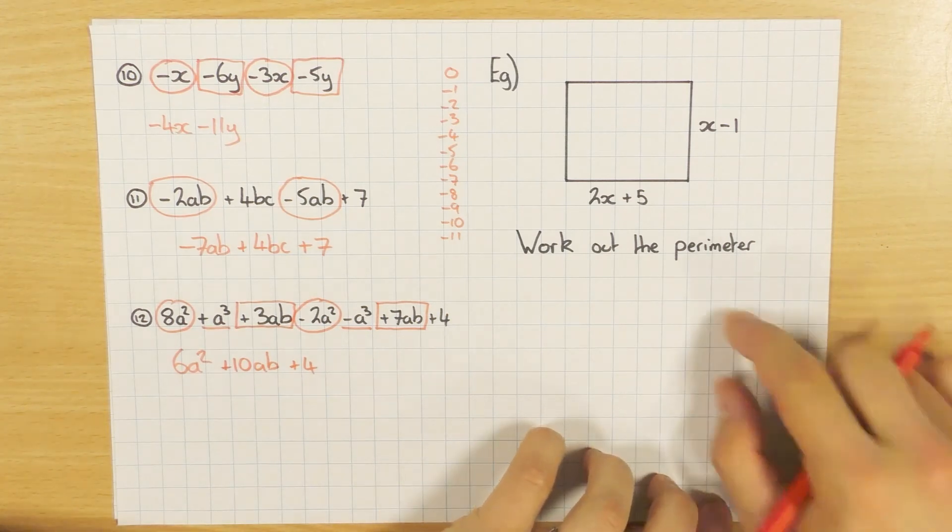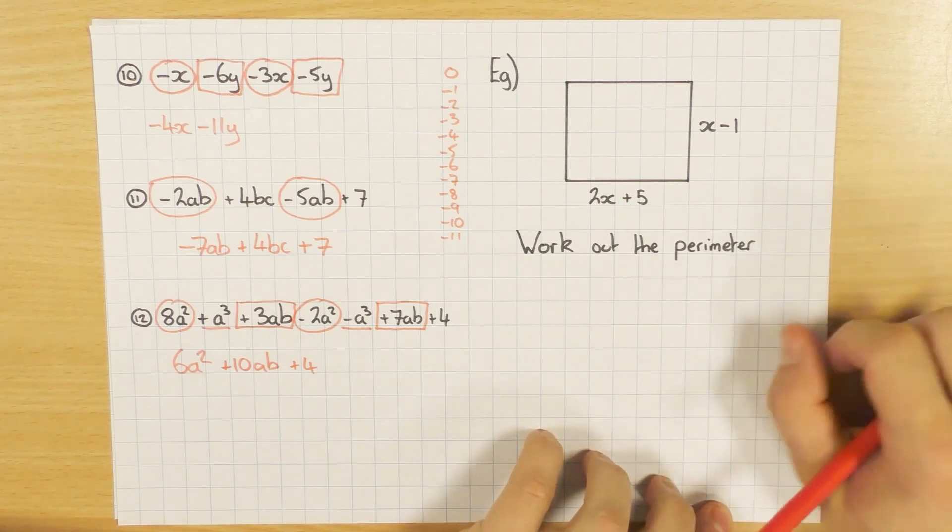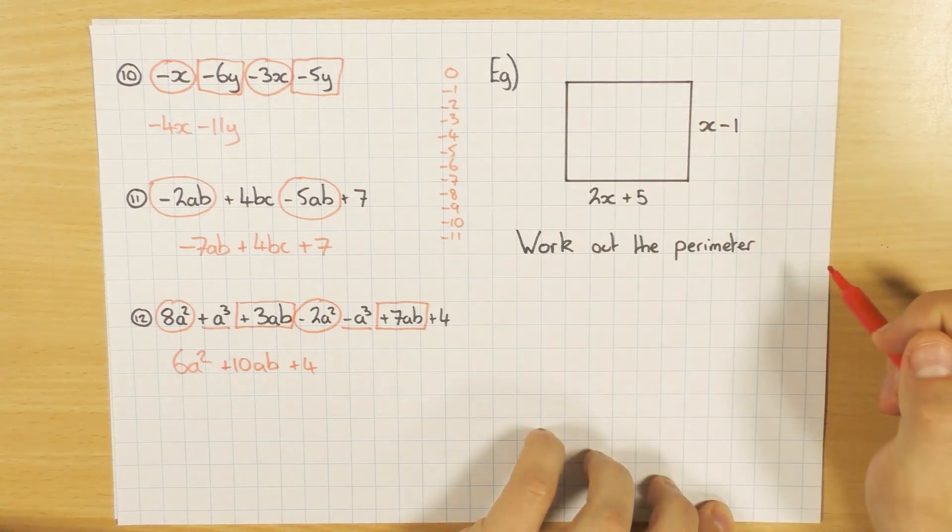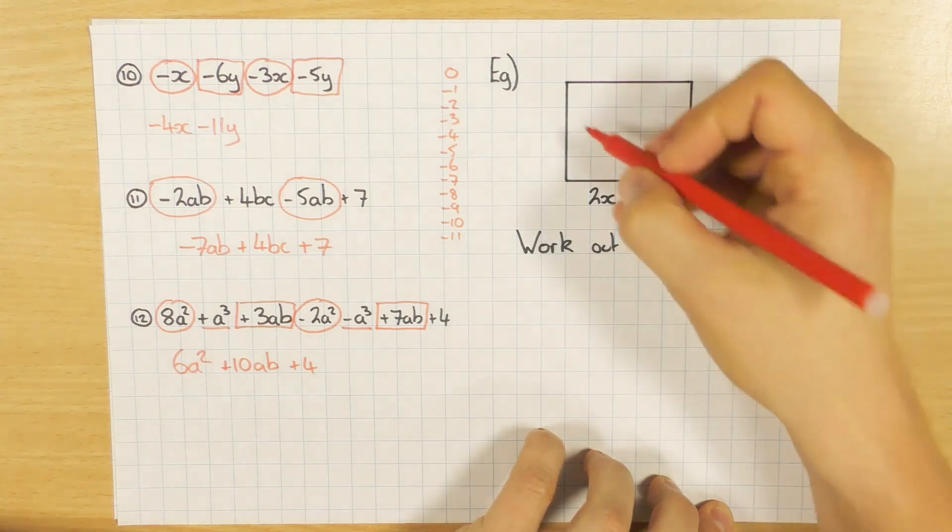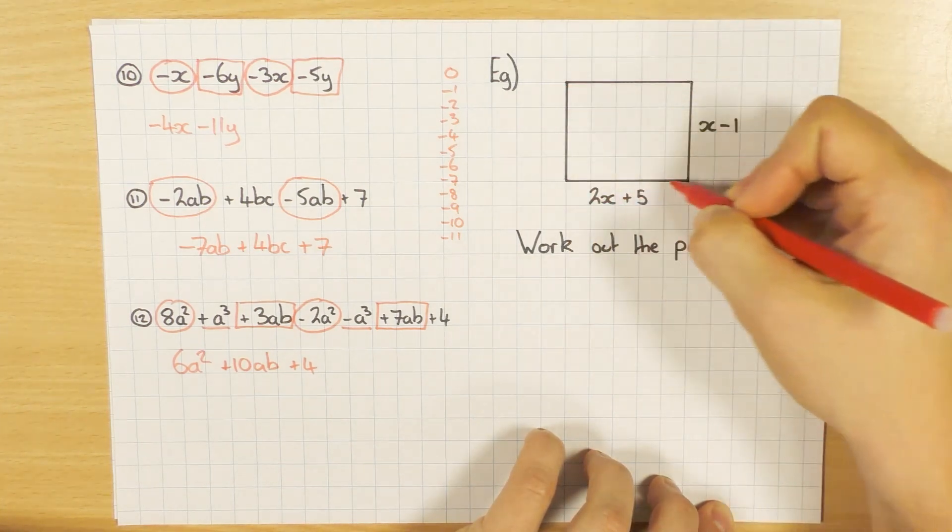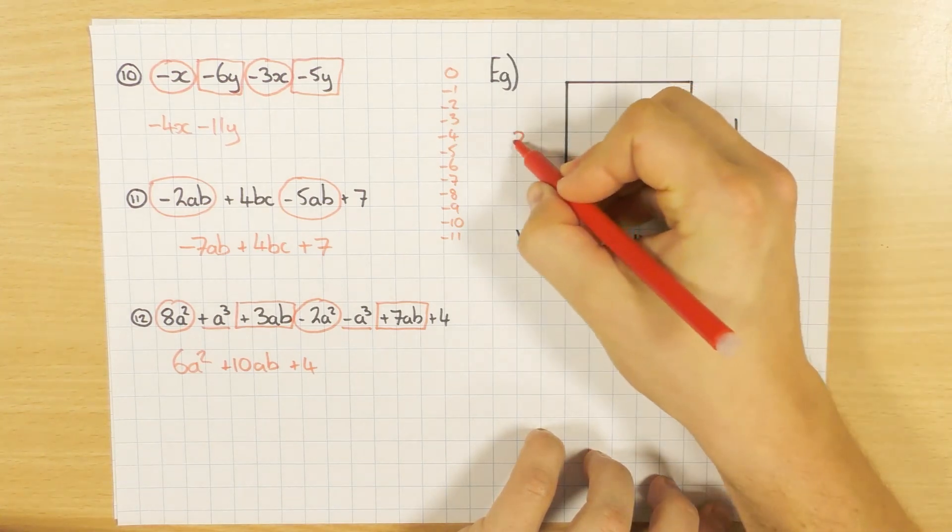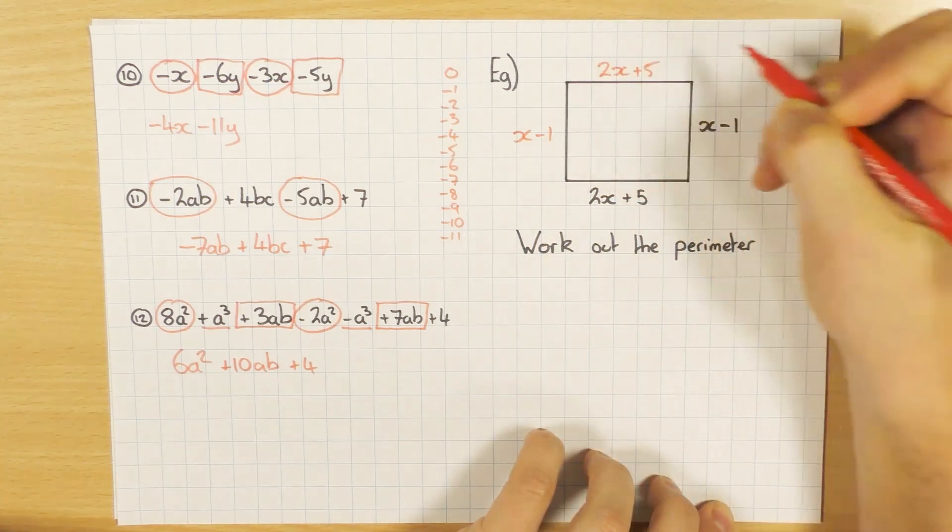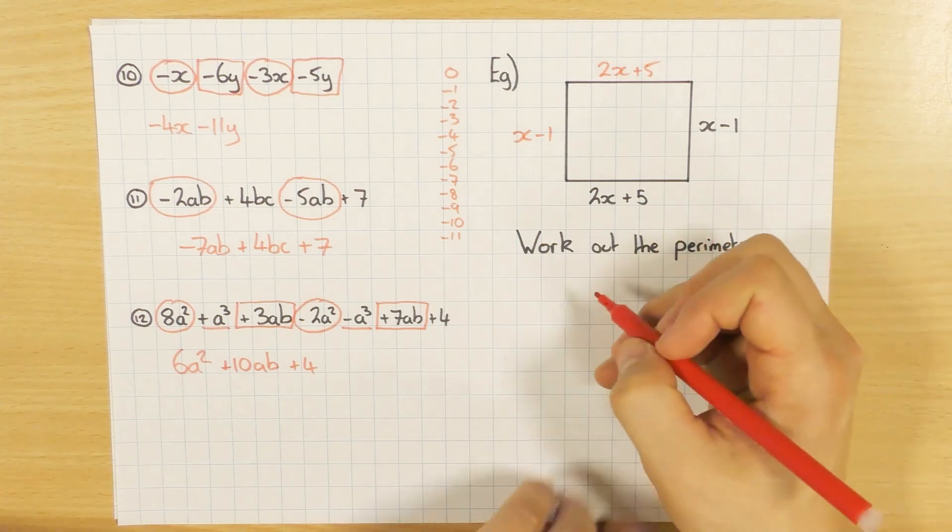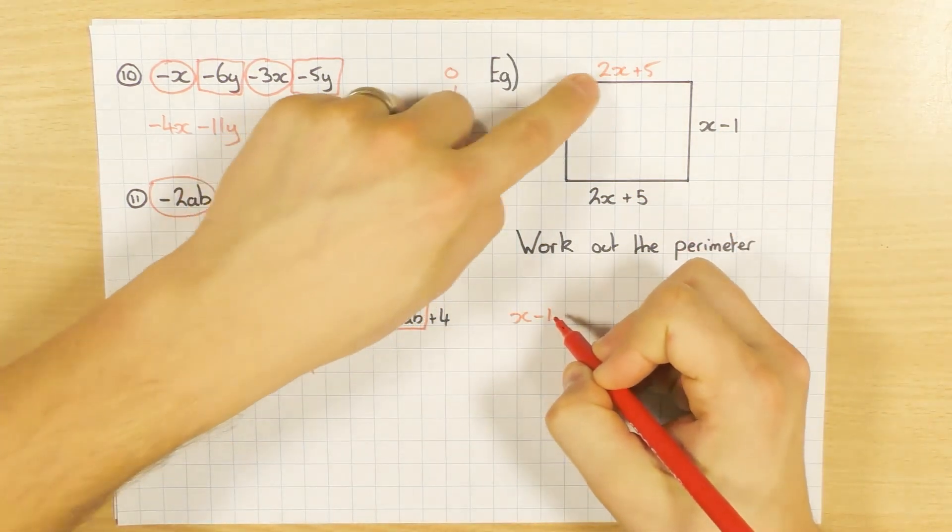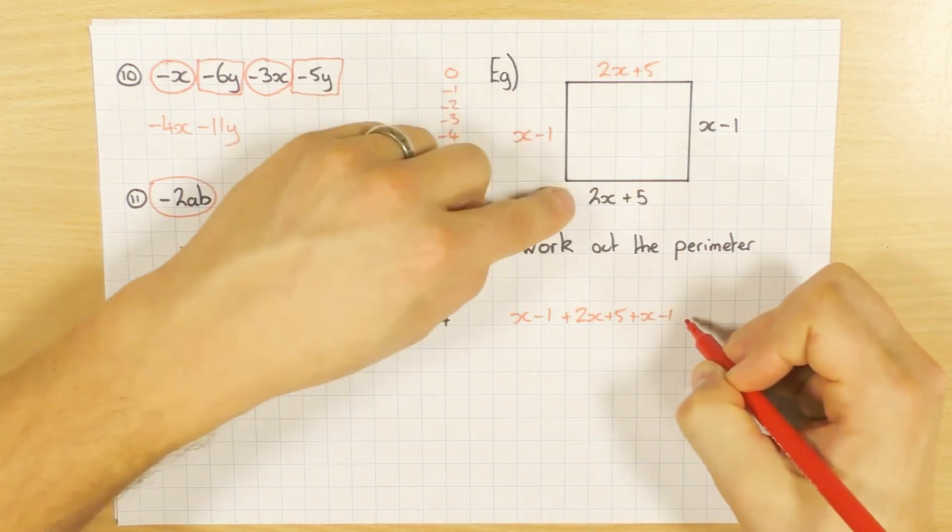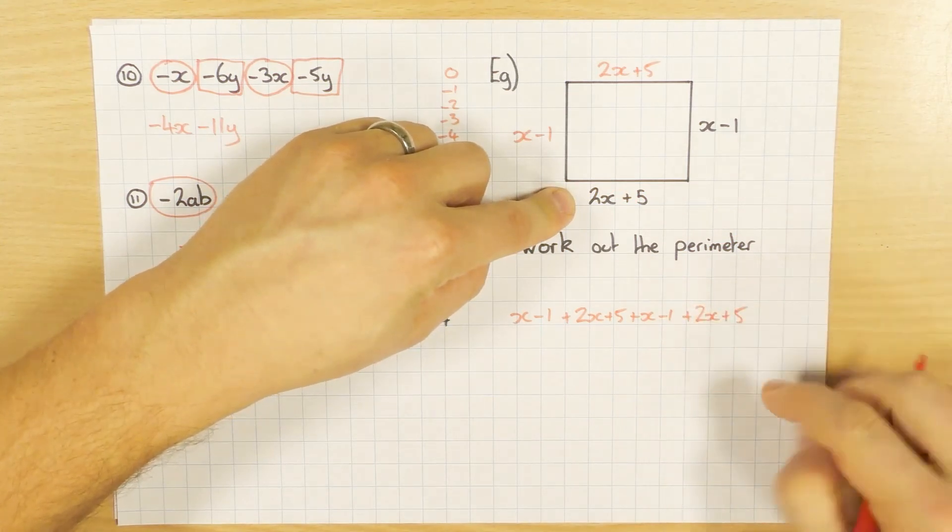Now what they could do in exams is ask you something like this. Well, they give you a shape and they say work out the perimeter. So hopefully you remember that perimeter is when you add all the sides up. Now the common mistake people make is they just add these two together and they think they're done. But be careful. The perimeter is the distance all the way or the length all the way around the shape. And because it's a rectangle, I know those two are the same and I know the top and the bottom are the same. So I highly recommend you put them on and then write the whole thing out. So I've got my X minus 1 plus this side, plus this side, plus this side.